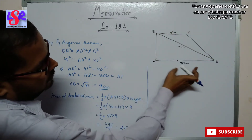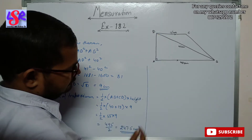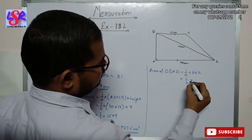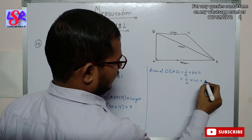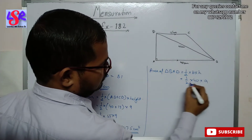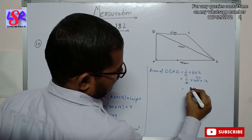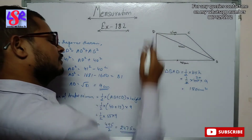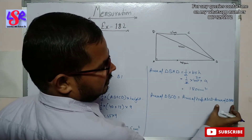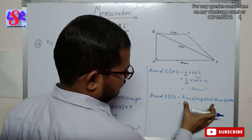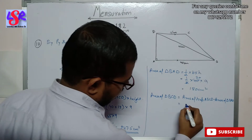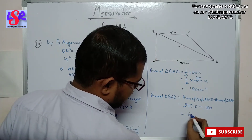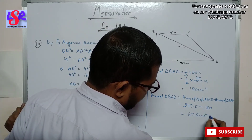To find the area of triangle BCD, we first find the area of triangle BAD. Area of triangle BAD = (1/2) × base × height = (1/2) × 40 × 9 = 180 centimeters square. Then area of triangle BCD = area of trapezium ABCD − area of triangle BAD = 247.5 − 180 = 67.5 centimeters square as the answer.